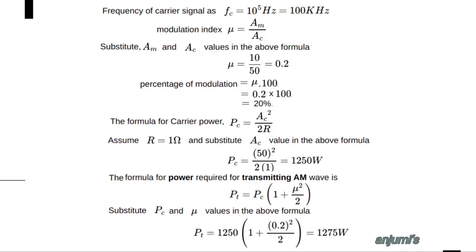Formula for carrier power: PC = AC² divided by 2R. Assuming R = 1 ohm and substituting AC value, we get PC = 50² divided by (2 × 1) = 1250 watts.